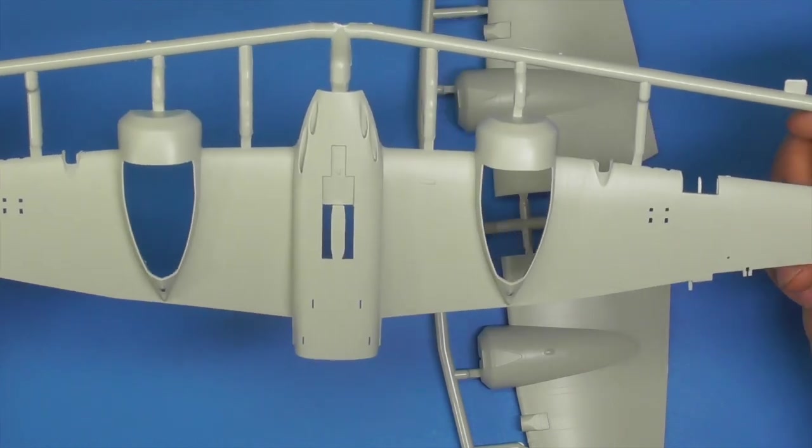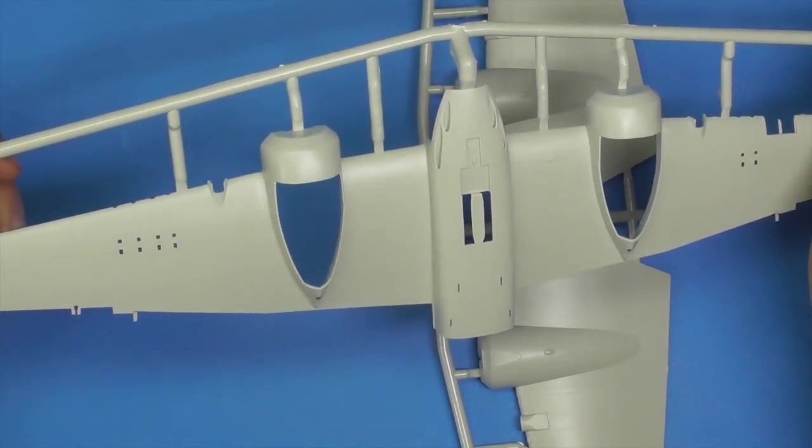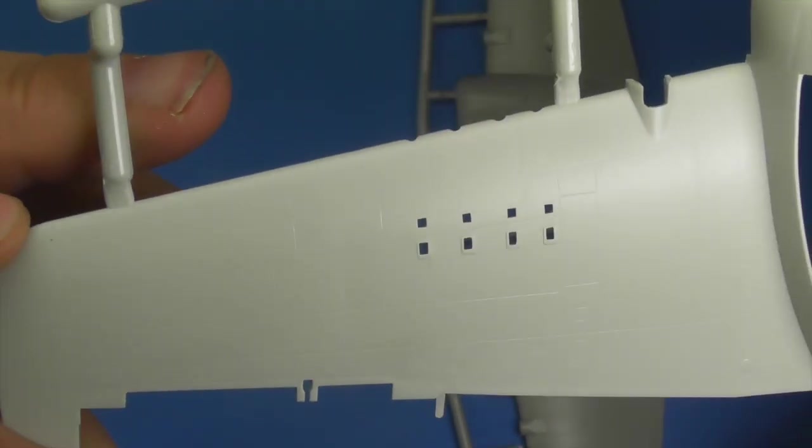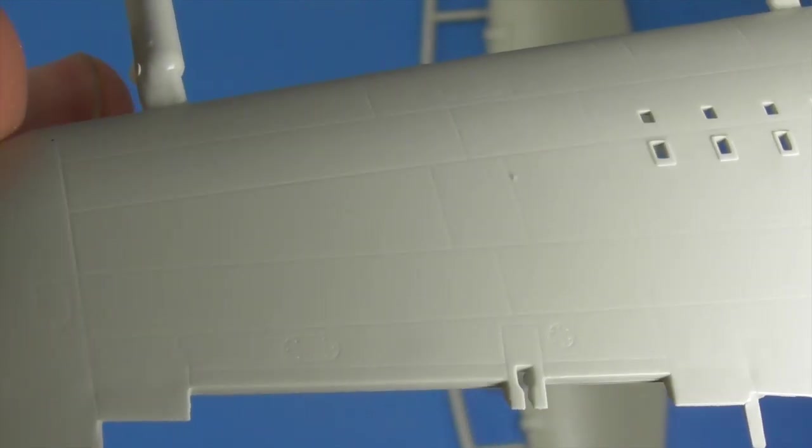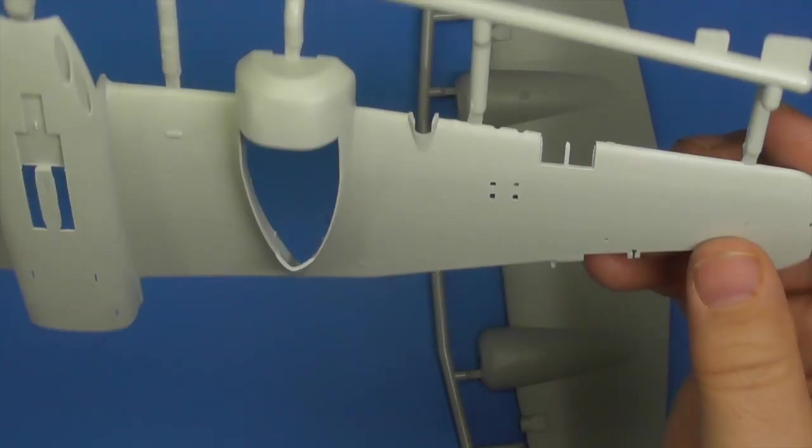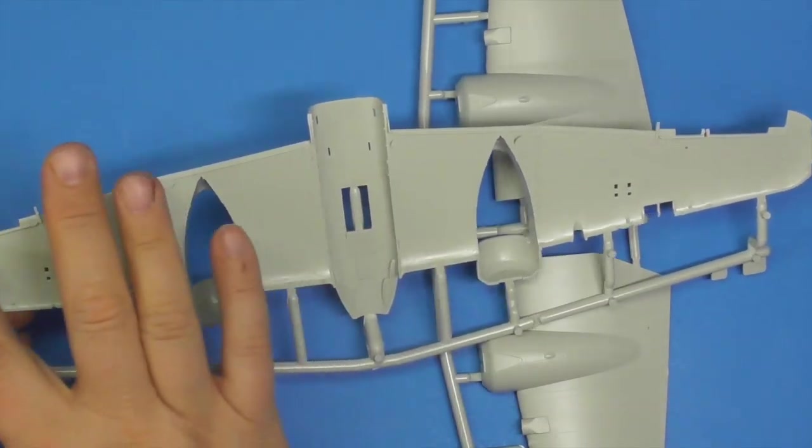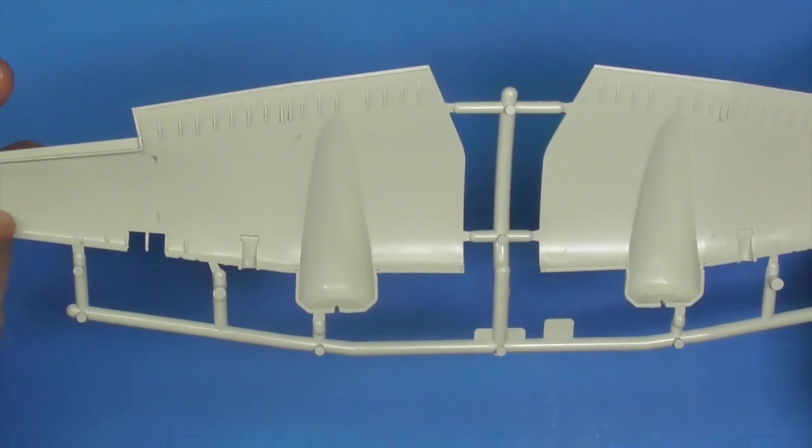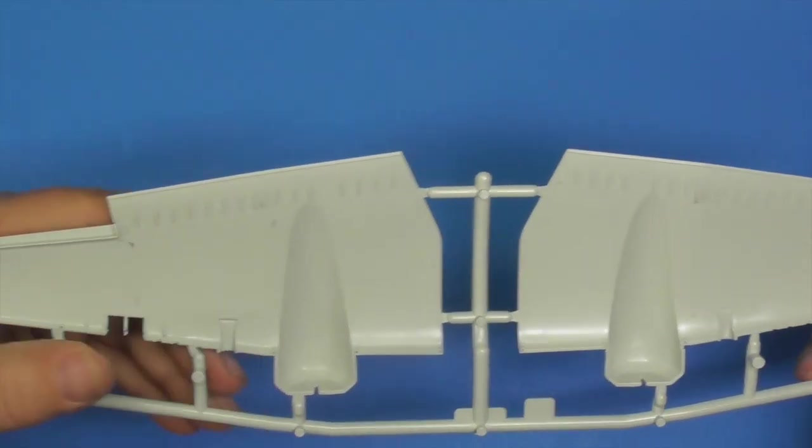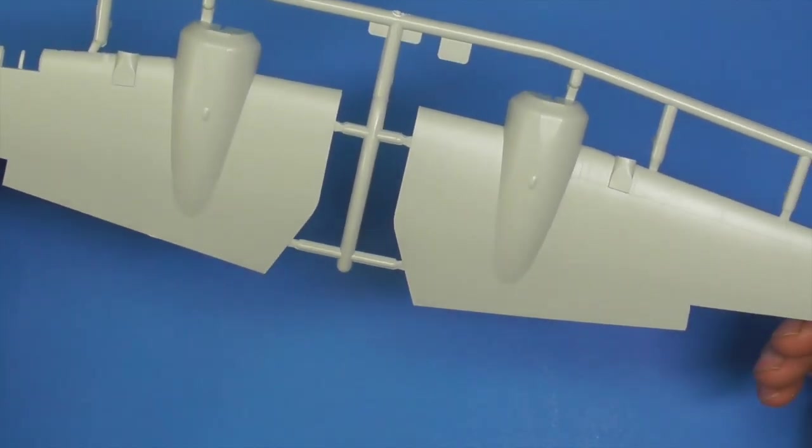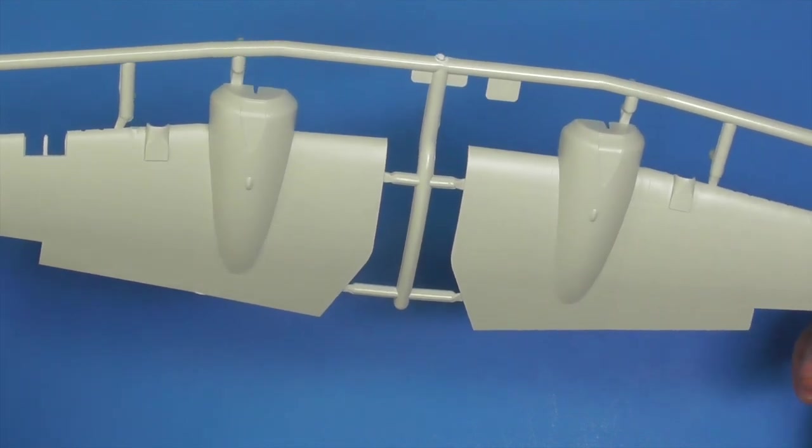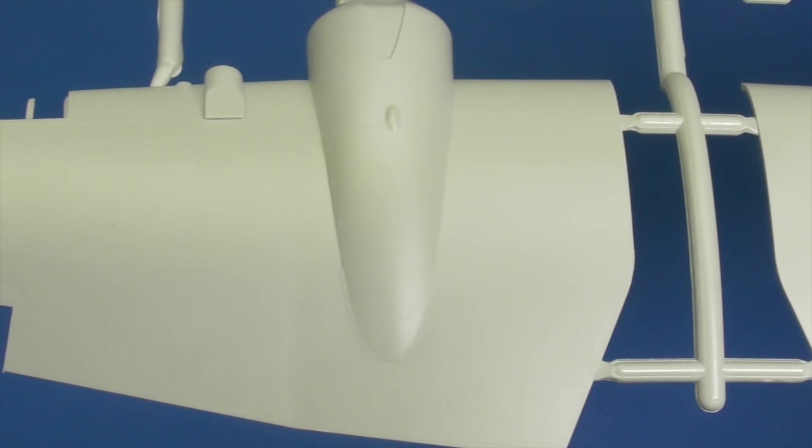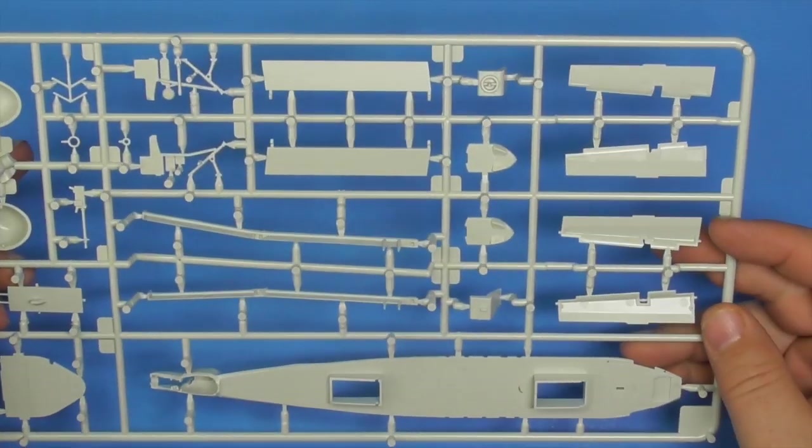Lots of good access panel detail, panel line detail, no rivet detail. I don't know if there's rivets on this, I'll have to look at my references. But you can see access panel detail does have rivets and screw heads in it. Again, check all your ejector pin marks, make sure they're flush so you don't have a problem when you're doing your test fitting and then actually gluing them together. There's some detail for flaps down, which is nice. And the same thing on the top, panel line detail, access panel detail, but no real rivet detail at all.